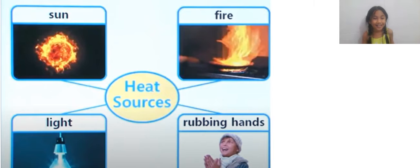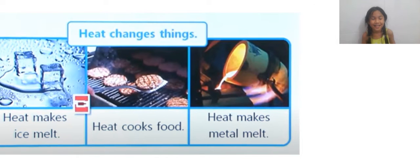So now let's look at heat. Heat changes things. How can heat change things? Heat can make ice melt. If you look at this ice, it is melting.